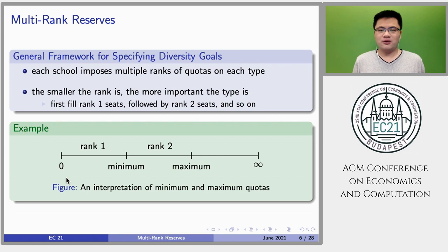For example, we can interpret minimum and maximum targets by using two ranks of quotas. For a given type, rank 1 corresponds to the case that the number of matched students of that type is no larger than the minimum quota. Rank 2 corresponds to the case above the minimum quota, but no larger than the maximum quota.